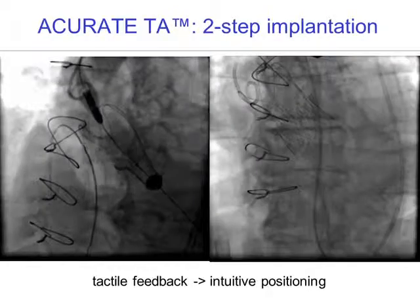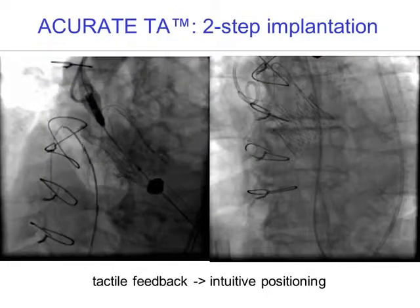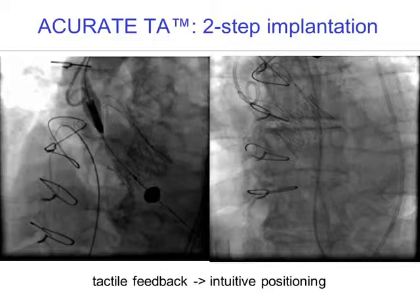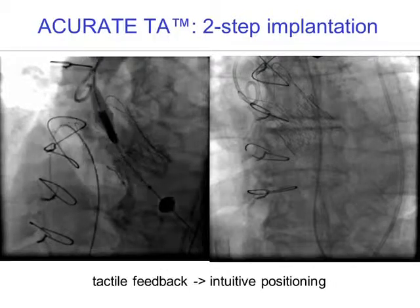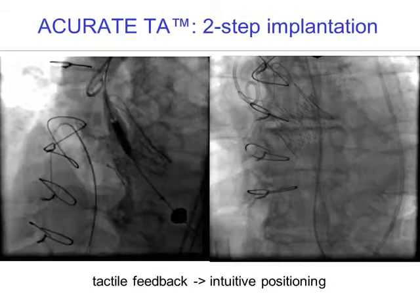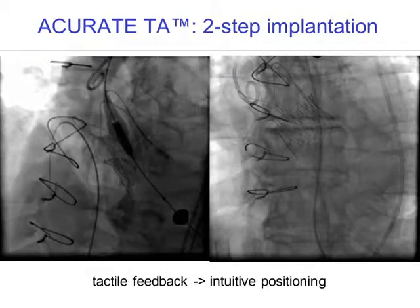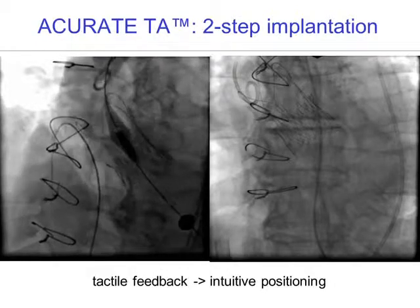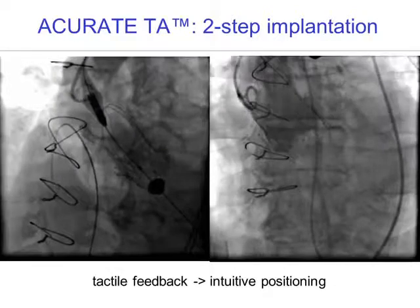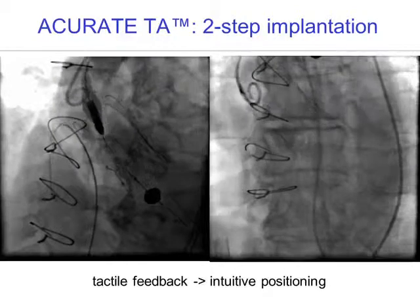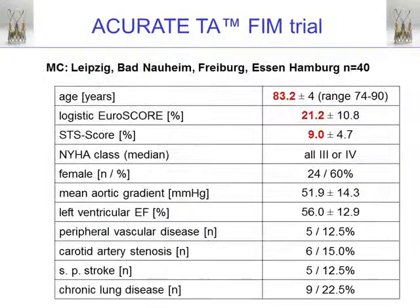On the left, you can see the partial release has already been done and the valve slowly opens. By gently pulling on the device, you then safely anchor it down into the aortic annulus, which led to a good result in this patient.